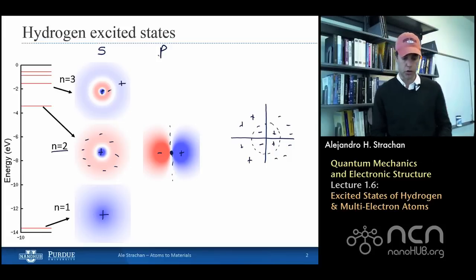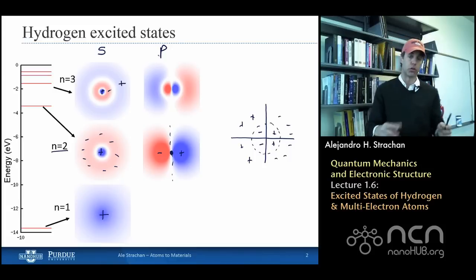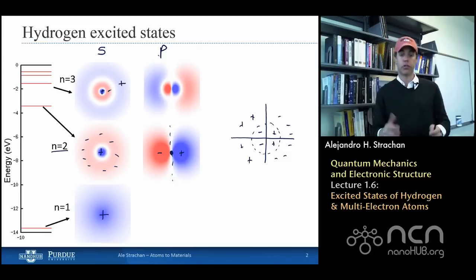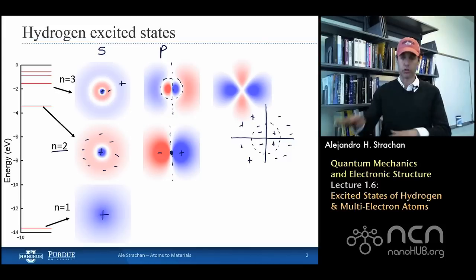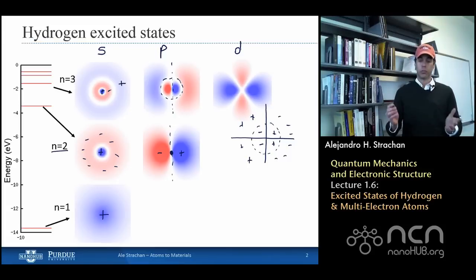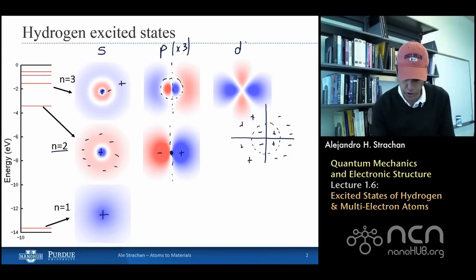Let's do the same exercise for n equals 3. Now I need two nodes. The 3s wave function has two spherical nodes. The 3p wave functions have a spherical node plus a plane. Given that I have two nodes, I can also put them along different planes — those are called d functions. For p states I can pick any of the three planes, x, y, and z, so I have three p states. For d states, counting is a little more difficult, but the solution is that I have five d states.